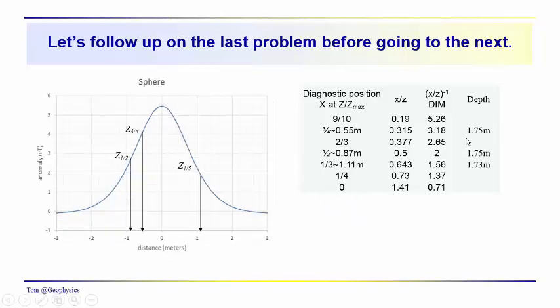Hopefully you got 1.75 meters. I only used three of the diagnostic positions here at 3 quarters, 1 half, and 1 third, and they were fairly consistent. So we can probably conclude it was about 1.75 meters down to the center of the sphere that's producing this anomaly.